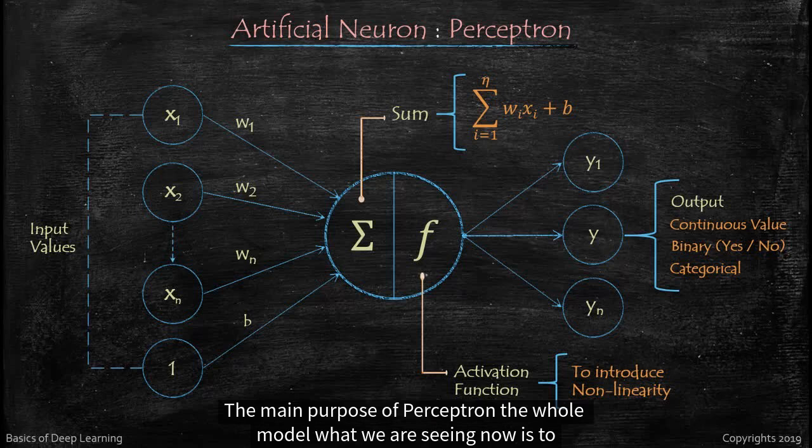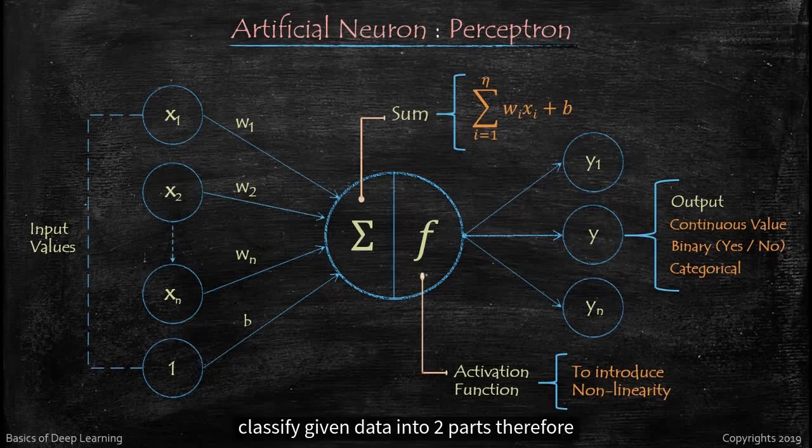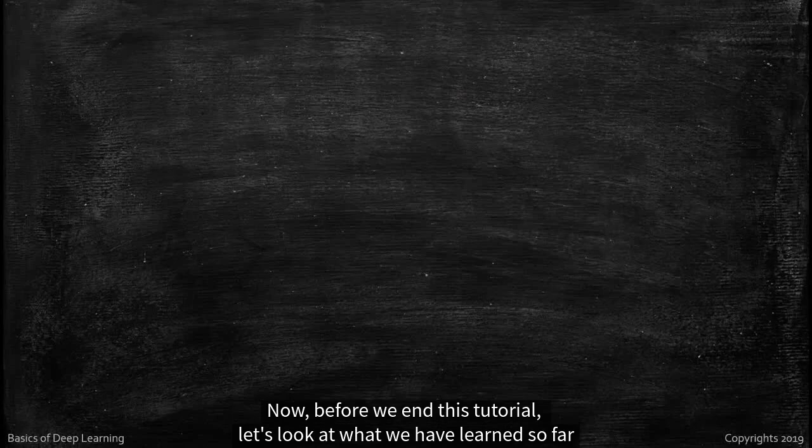The main purpose of perceptron, the whole model what we are seeing now, is to classify given data into two parts. Therefore it is also known as linear binary classifier. So this is all about an artificial neuron. Now before we end this tutorial.